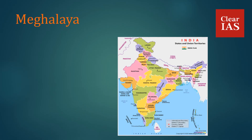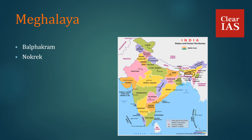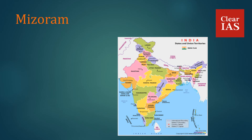In Meghalaya, we have Balpakram National Park and Nokrek National Park. Nokrek National Park is also a UNESCO World Biosphere Reserve and is famous for its population of red pandas. In Mizoram, we have Murlen National Park and Phawngpui National Park.